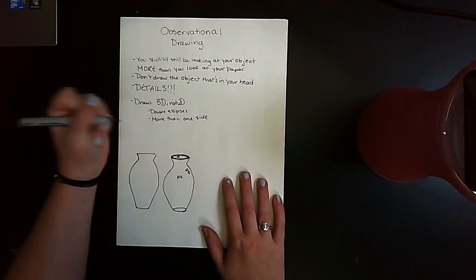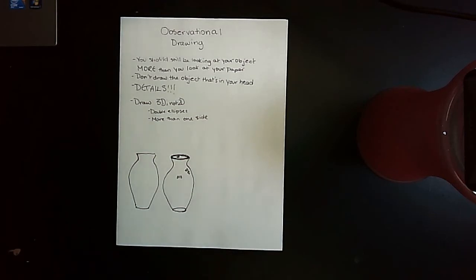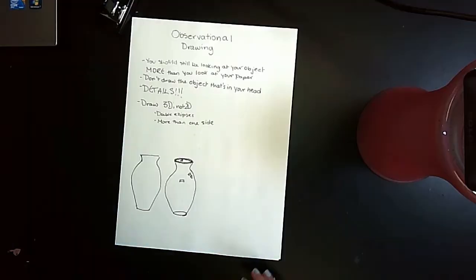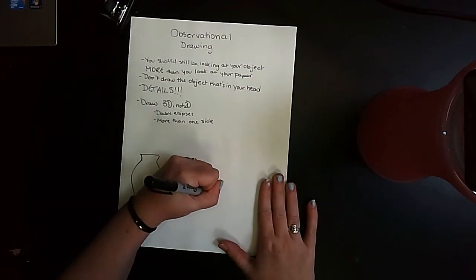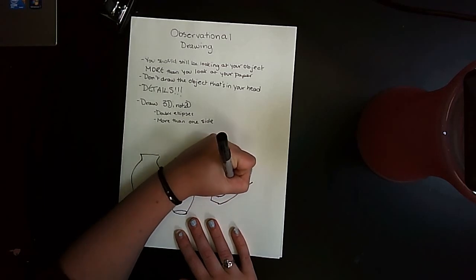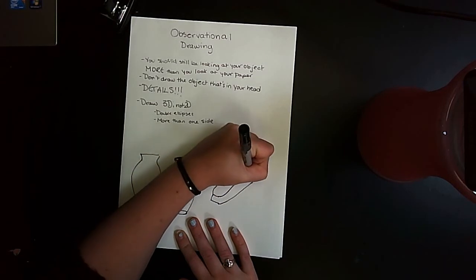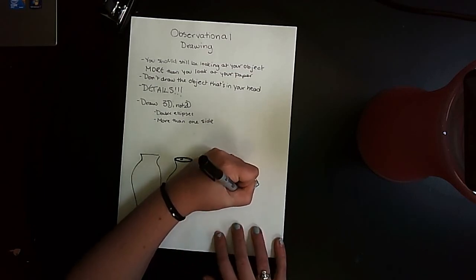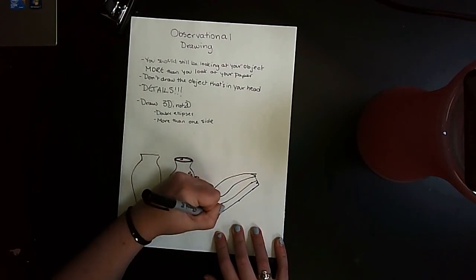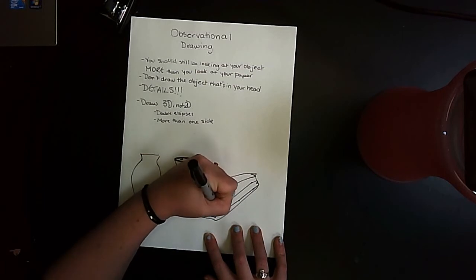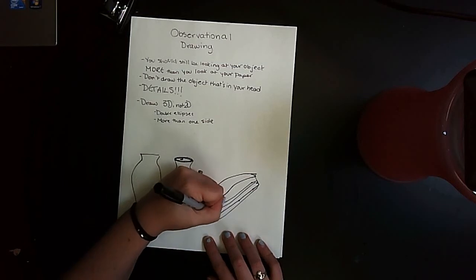When you have an object that's a square, such as a stapler, it doesn't have any round edges or ellipses. So I need to make sure I am drawing more than one side of my stapler. I need to show that it exists within a realm of space.